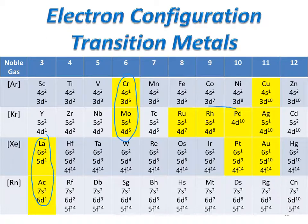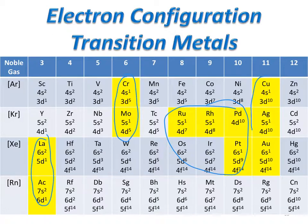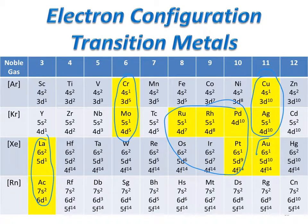There is a group in the middle that has its own way of accomplishing low energy states. Copper, silver, and also gold are similar to chromium and molybdenum in that they promote an electron from the S orbital up to the D subshell. The reason for doing this is to give the D subshell a full subshell, which tends to be a more stable configuration.